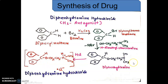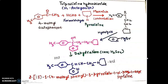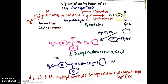This way we can synthesize diphenhydramine hydrochloride. The next synthesis is tripelennamine hydrochloride, which is again an H1 antagonist. Here we also require knowledge of the structure. We take starting materials: 4-methylacetophenone, formaldehyde, and pyrrolidine, and by performing a Mannich condensation we obtain an intermediate.